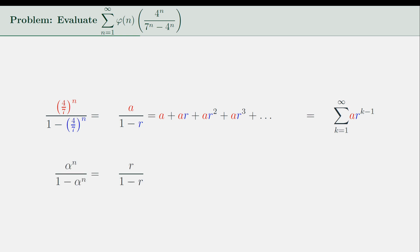For the rest of the discussion, we will let α equal 4/7, which makes the entire expression equal to α^n/(1-α^n).